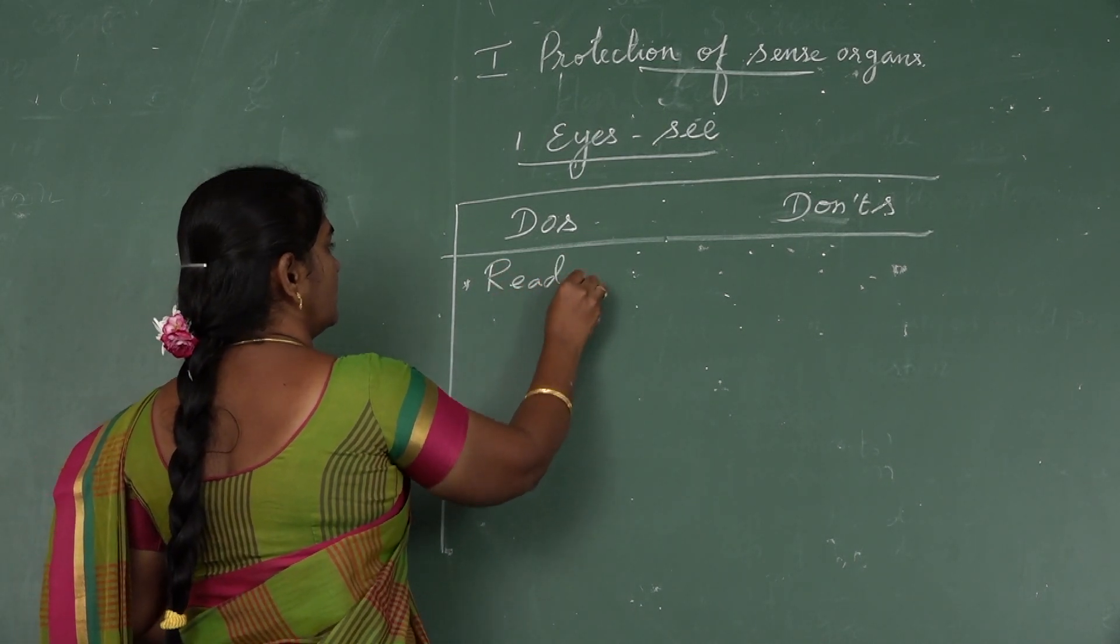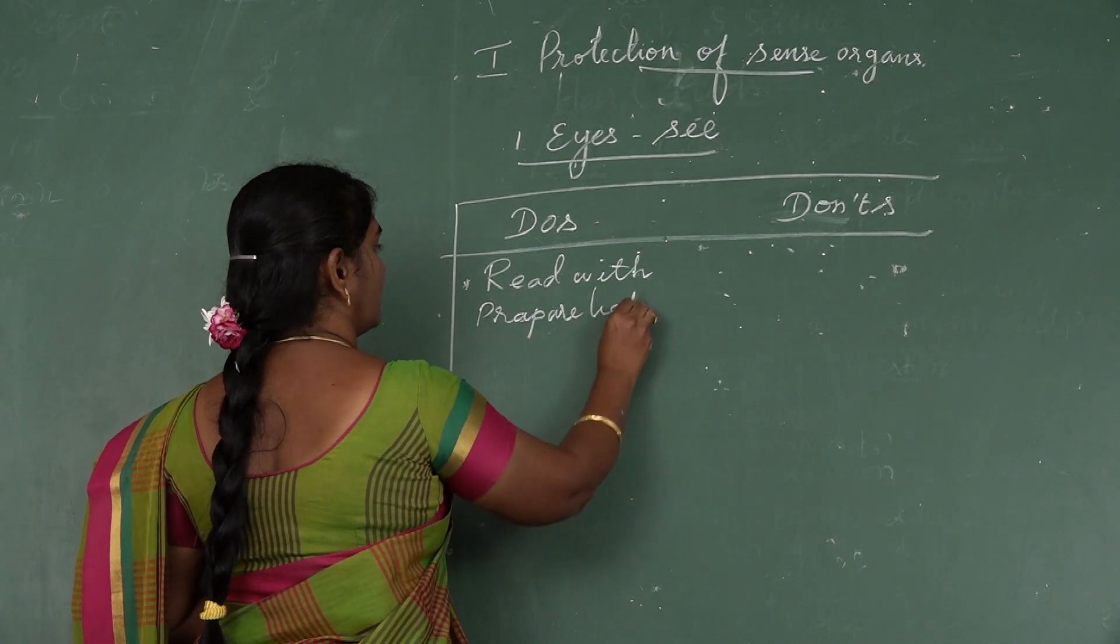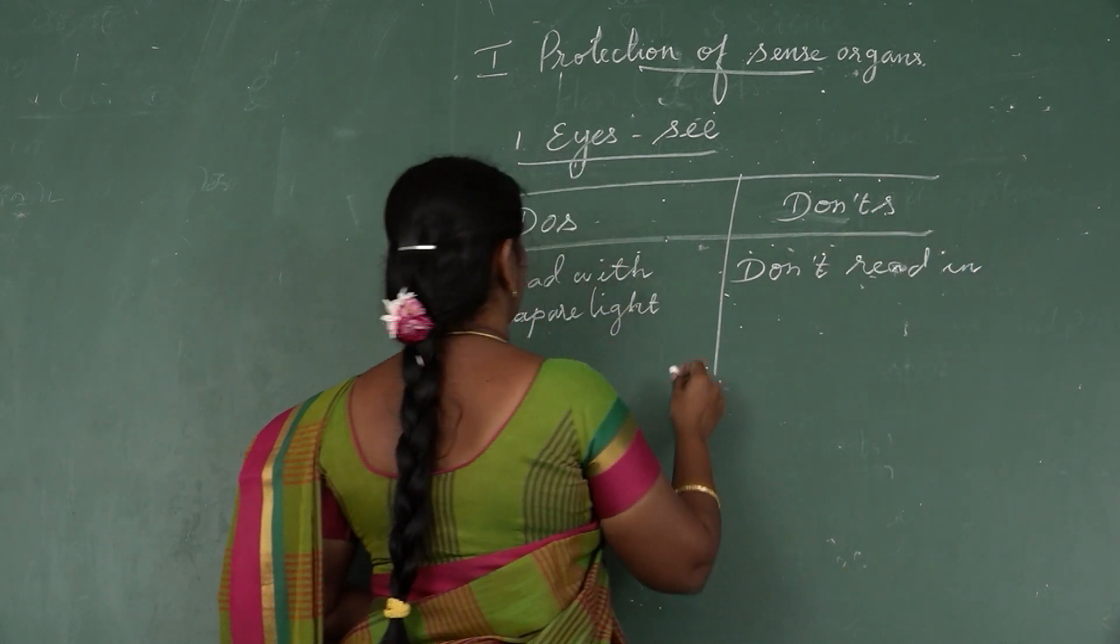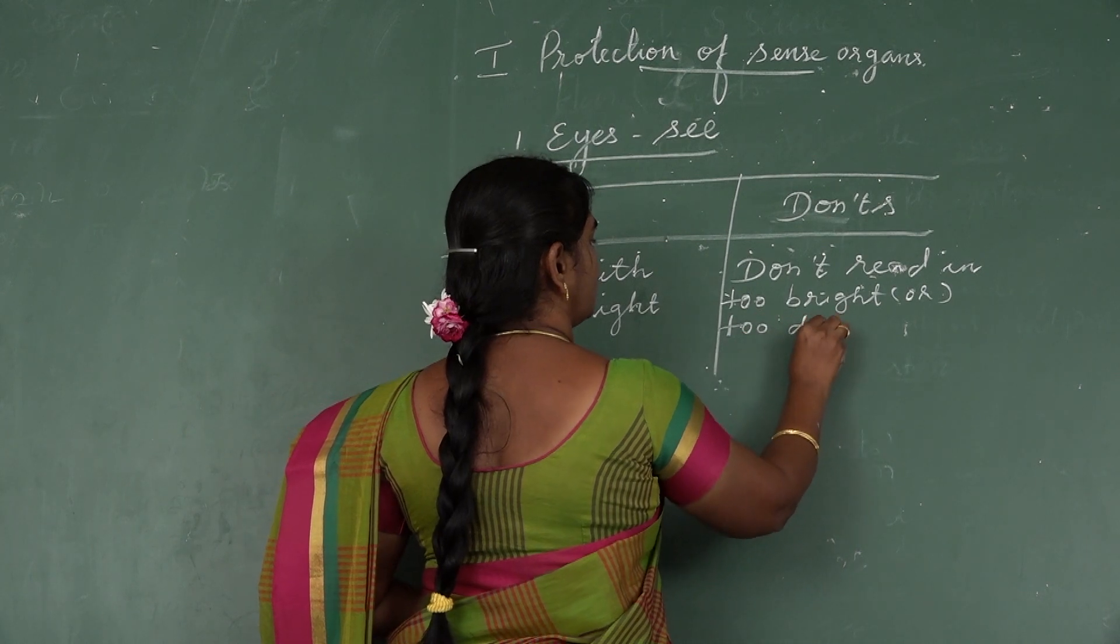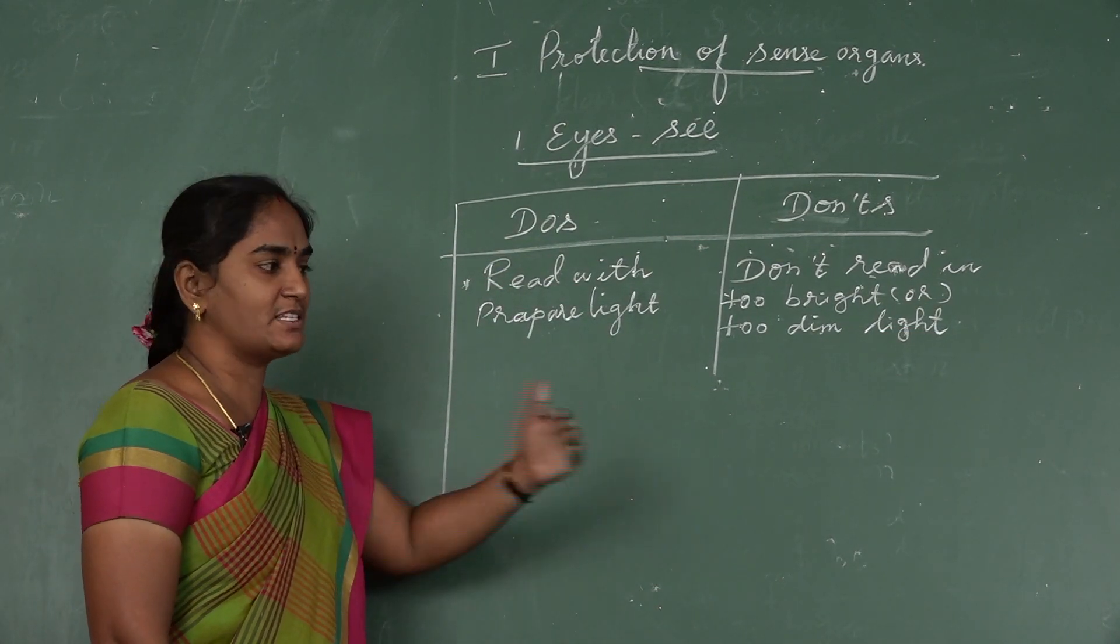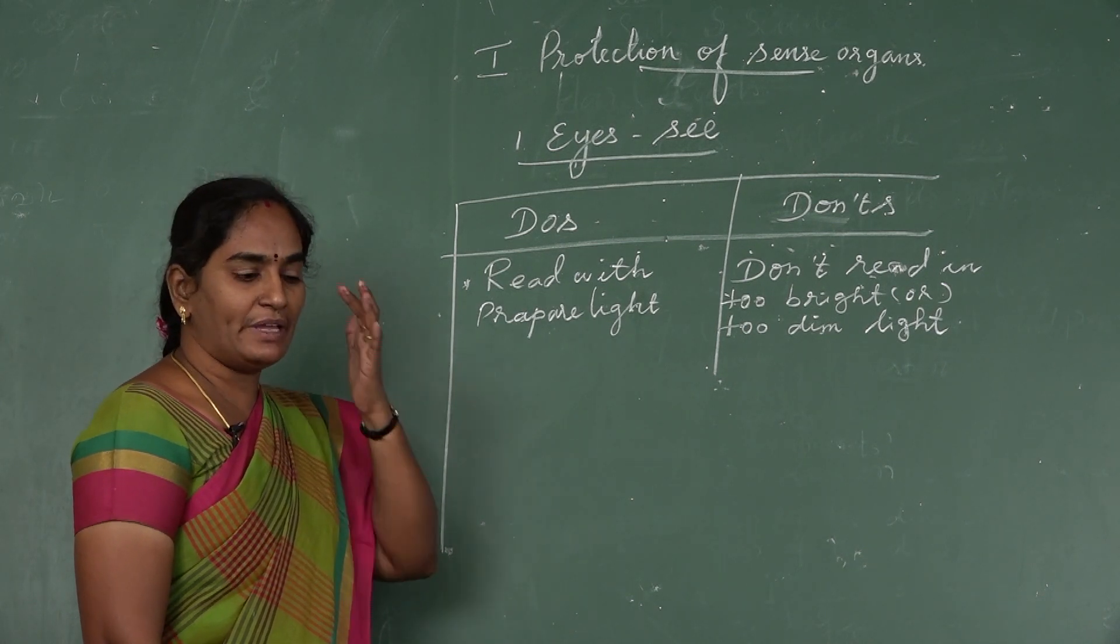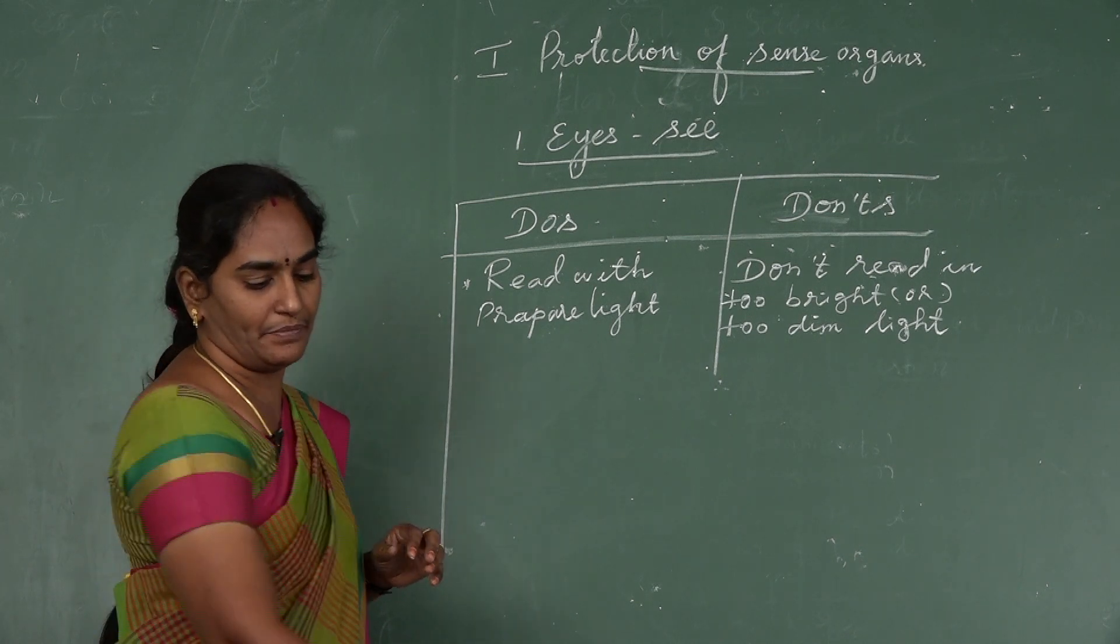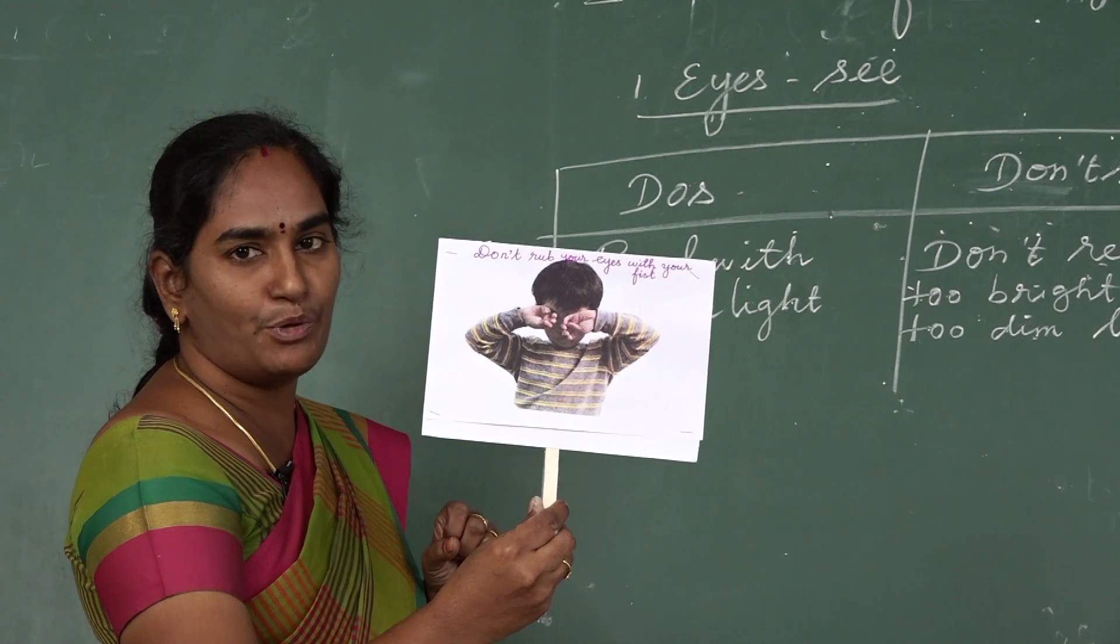We want to read with proper light. Don't read in too bright or too dim light. Watch TV from a minimum distance of 6 feet. Don't play video games and watch TV for a long time. If you have any irritation in your eyes, wash it with clean and cold water. Don't rub your eyes with your fist.